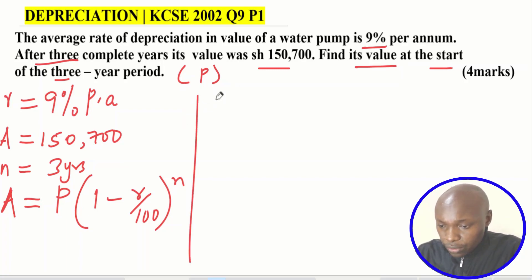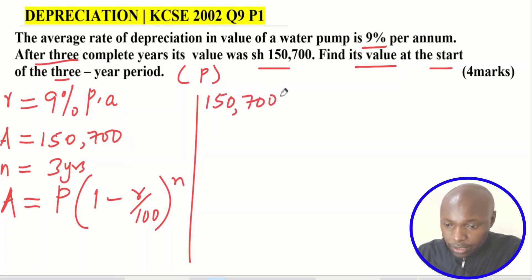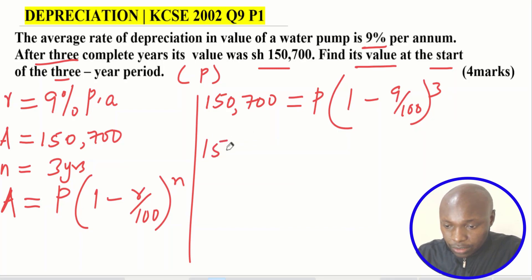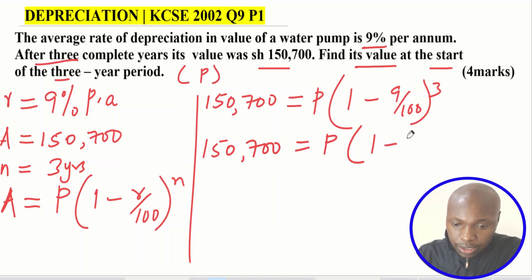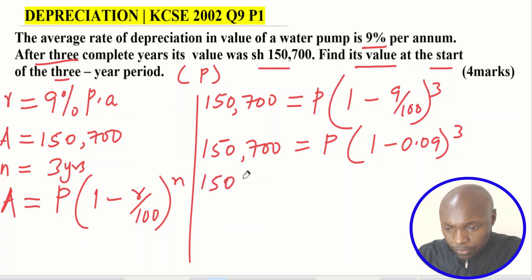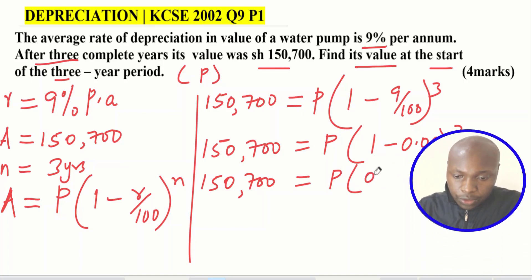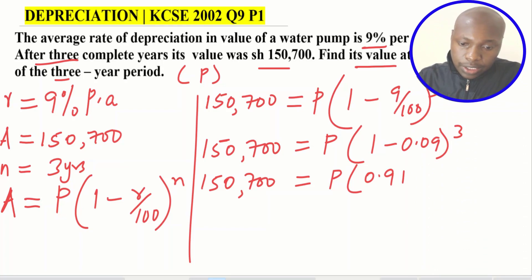Substituting: A which is 150,700 equals P multiplied by one minus nine over 100, raised to the power three. We calculate: 150,700 equals P multiplied by one minus 0.09 raised to the power three. One minus 0.09 gives 0.91, so 150,700 equals P times 0.91 cubed.